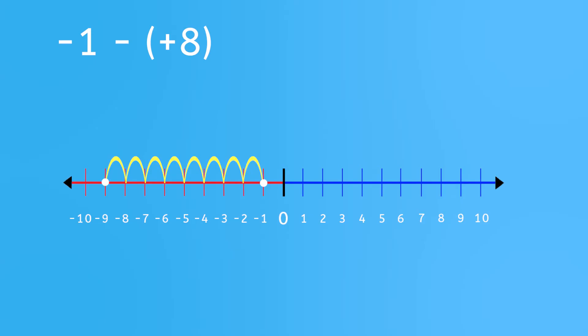You can then write the original sentence with the correct answer like this: negative 1 minus 8 equals negative 9. See? You don't need to think negatively about integers at all.